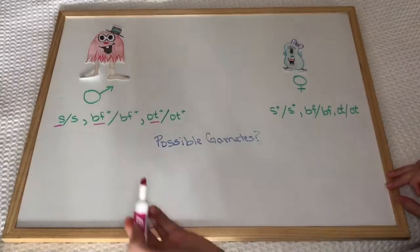In this scenario, we have monster friends who want to figure out the order of alleles on the chromosomes they passed on to their children. In this monster world, short stature is S, big feet is BF, and one tooth is OT. All those traits are dominant, and the parental genotypes are listed underneath their pictures.